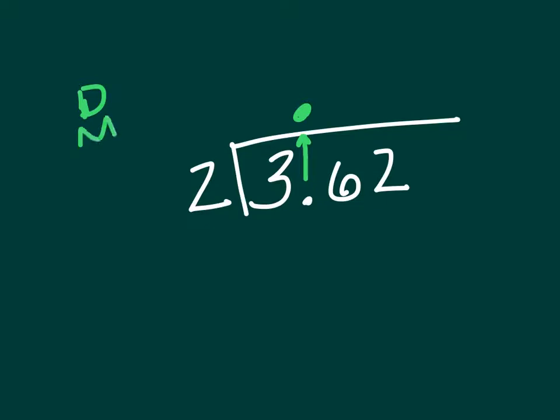Divide, multiply, subtract, bring down, and check. That's supposed to be a check mark. Yeah, you get the idea.